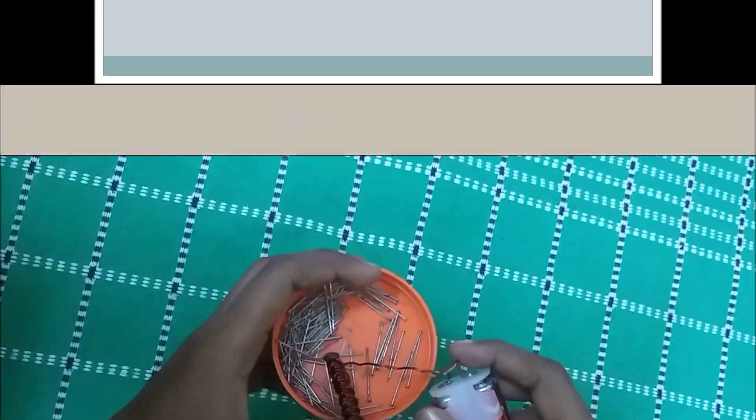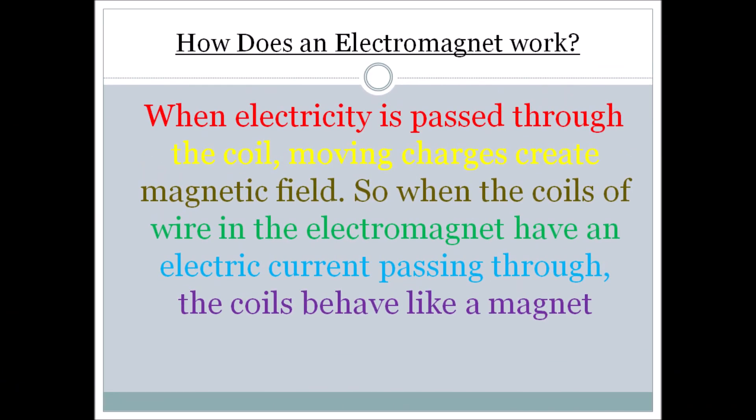Now let's see how it works. When electricity is passed through the coil, moving charges create magnetic field. When the coils of the wire in an electromagnet have an electric current passing through, the coils behave like a magnet.